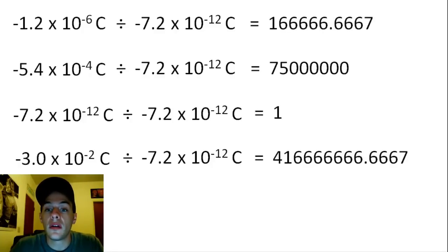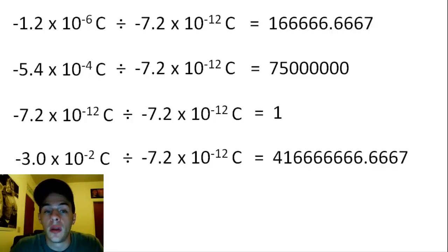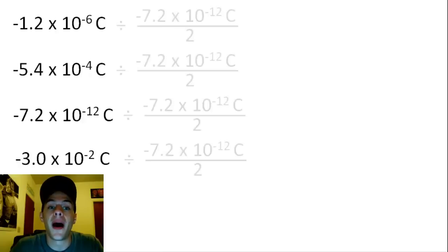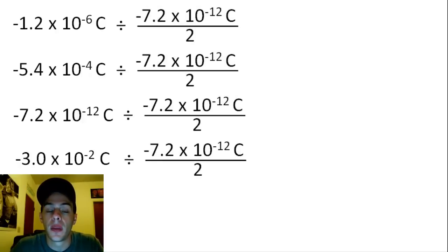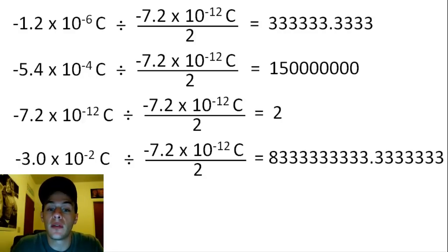Notice that not all four of these numbers are whole numbers, so in other words, the smallest value — negative 7.2 times 10 to the negative 12 Coulombs — is not the charge of the particle. So we have to move on and start dividing all four of the numbers by half of the smallest value. Again, we don't have whole numbers all across the board, so this can't be the charge of the particle.